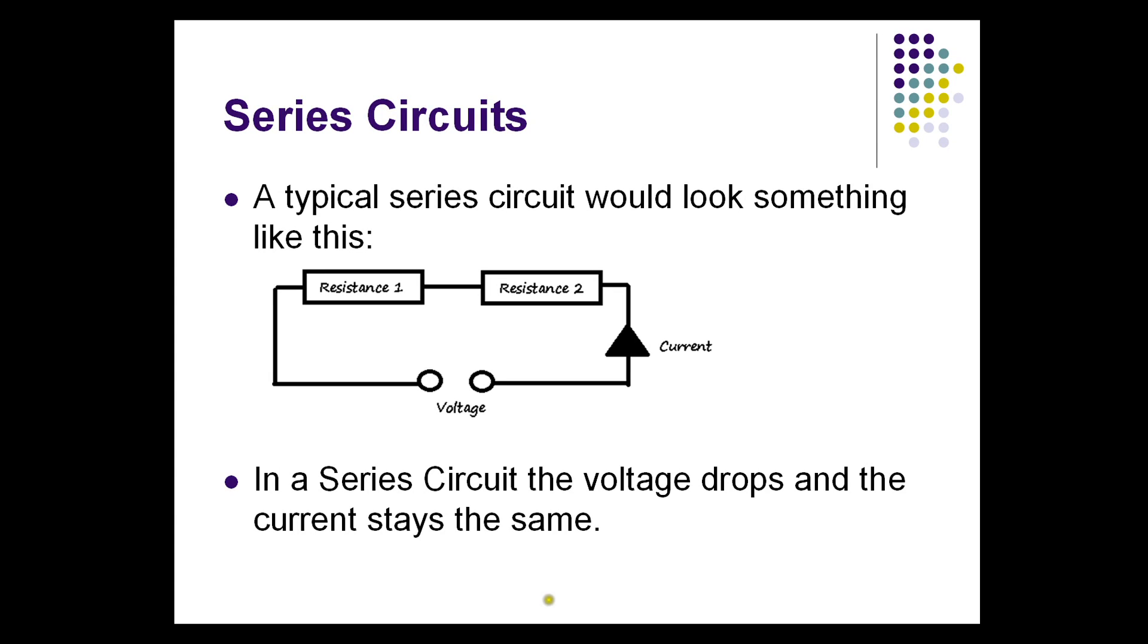So the voltage will go out from the source, go through the one resistance, through the other resistance and return to the source. When it goes through the first resistance, the voltage will drop. So the voltage will be lower here, if you can see my mouse, then it will be here.